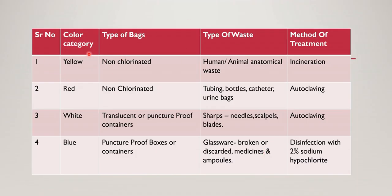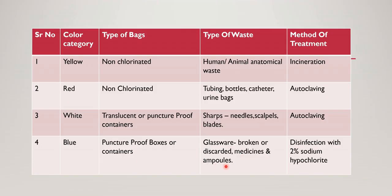This is a color-coded category showing the type of bag, what type of waste goes in each color category, and the main method of treatment. If the bag is yellow colored, it is a non-fluorinated bag — human anatomical waste goes in it and the method of treatment is incineration. Second is the red bag, also non-fluorinated — tubing, portals, catheter and urine bags, treated by autoclaving. White translucent or puncture-proof containers are for sharps: needles, scalpels and blades, with autoclaving as the main method. Blue puncture-proof boxes or containers are for glassware, broken or discarded medicine and ampoules, treated by disinfection with 2% sodium hypochlorite.